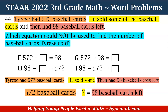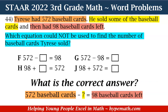So let's set up our equation. Tyrese had 572 baseball cards, he sold some, then he had 98 baseball cards left. In order to find the correct answer, we need to write an equation with the information we have. That way it will help us determine which equation cannot be used to find the number of baseball cards. Let's walk through each answer choice to see which one could absolutely not be used.